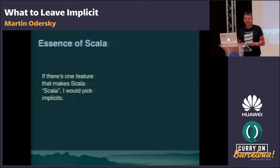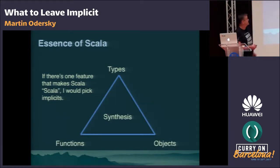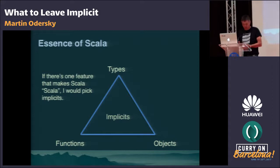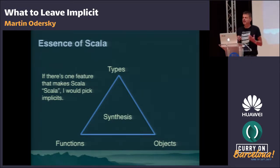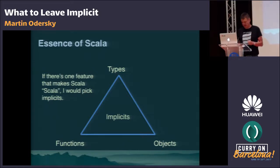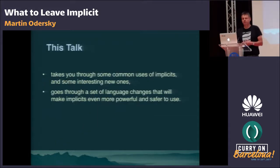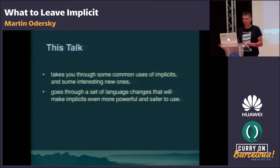Scala was originally meant to be a synthesis between functional and object-oriented programming in a strongly and statically typed context. Synthesis has two meanings here: Scala combines all these aspects, and Scala programs also do a lot of program synthesis. A lot of Scala code is not written by programmers but generated through the feature of implicits. Implicits are really the core because they make the whole thing hold together. I will cover common uses of implicits in Scala and go through language changes for future Scala that will make implicits even more powerful and safer.